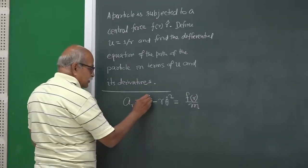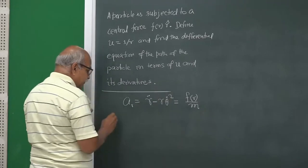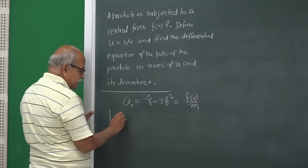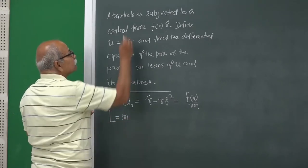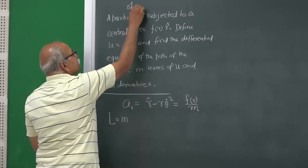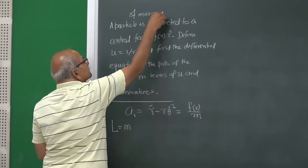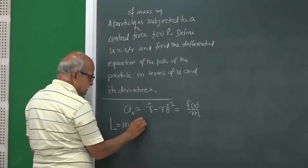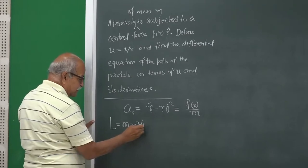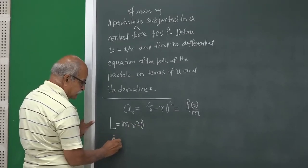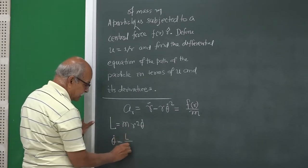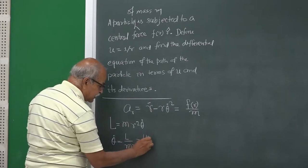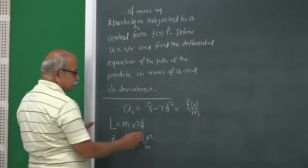Now, we start from here. What is r-double-dot, what is θ-dot, and so on. For central motion, a constant of motion is angular momentum: L = m·r²·θ̇. From here you can write θ-dot = L/(m·r²) = L·u²/m, since 1/r = u.